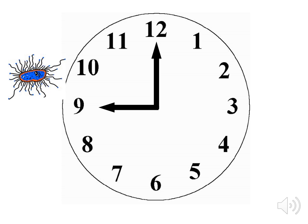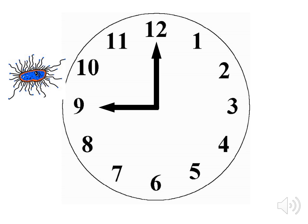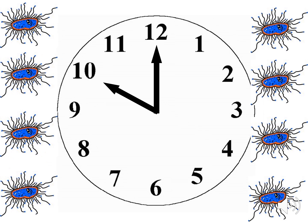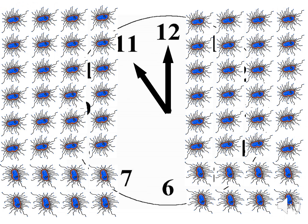Let's say we start with 1 cell of bacteria. In 20 minutes, that cell grows and divides into 2 cells. In 1 hour, it has divided and multiplied into 8 cells. After 2 hours, that 1 cell has divided and multiplied into 64 cells. 1 cell might not make you sick, but 64 could. The dose makes the poison.